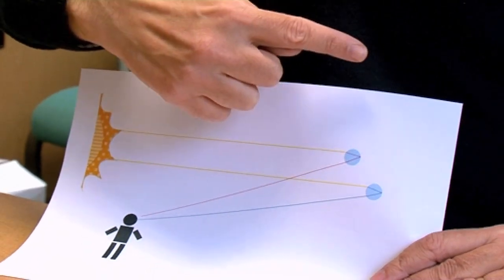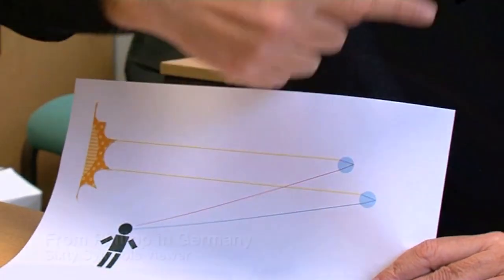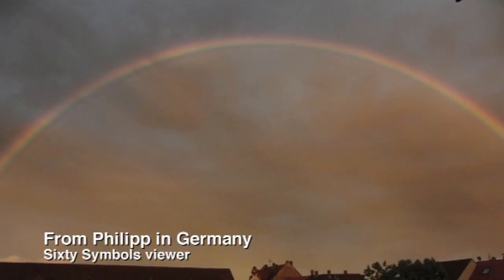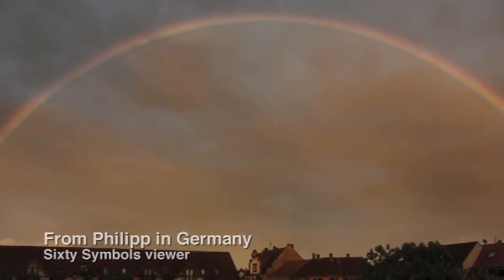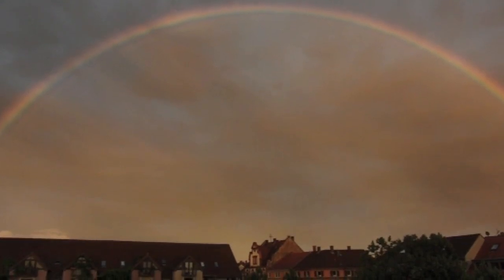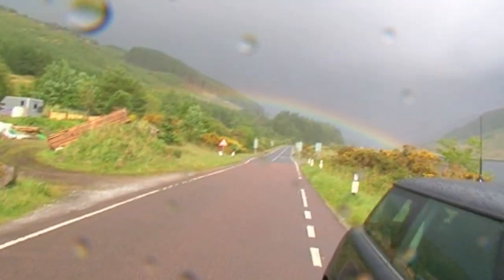That actually means that rainbows are round. There's actually a circle of points that are 42 degrees away from this line to the sun, but what actually happens is that half of that circle is typically below the horizon, so you see like half a circle of the light and you'll end up just seeing the classic rainbow semi-circle.